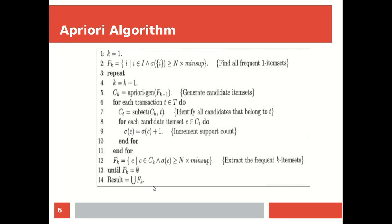We talked about the algorithm which uses the frequent itemset list and the transaction list, using support count. You start with one-itemsets — you add all the items and check them in every transaction, then check the minimum support criteria. If it satisfies, then it is frequent. Once you have found the frequent one-itemsets, you repeat this process for two-itemsets, three-itemsets and so on, generating candidate itemsets by building on the previous table.